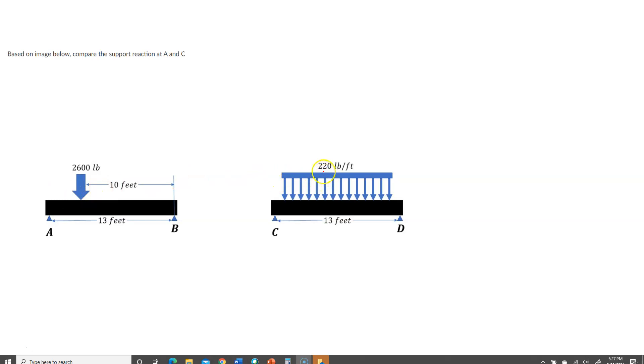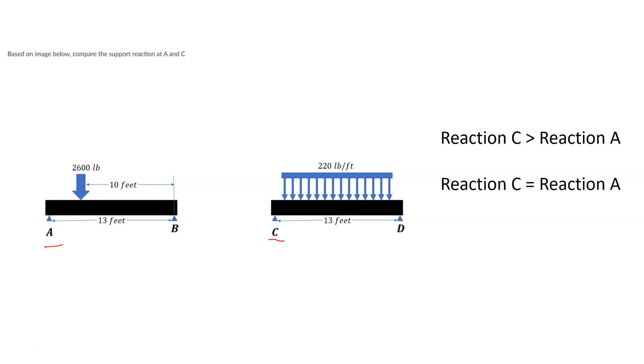The other has a 220 pound per foot uniform distributed load that goes over the length of the beam. Now the question was, based on the images below, compare the support reaction at both A and C. So the options were that reaction C is greater than reaction A, reaction C is equal to reaction A, and then reaction C is actually less than reaction A.